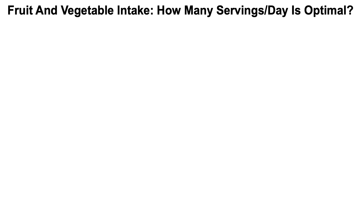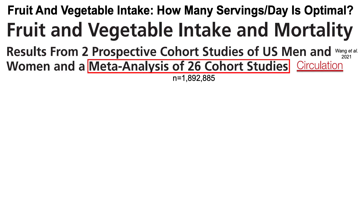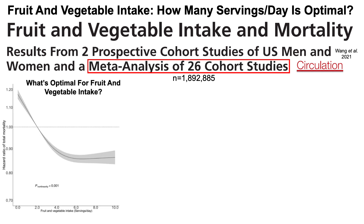Fruit and vegetable intake — how many servings per day is optimal? To help answer that question, let's take a look at this meta-analysis of 26 studies that included data for 1.9 million subjects. We've got the hazard ratio of total mortality, or all-cause mortality risk, on the y-axis plotted against fruit and vegetable intake in servings per day on the x-axis. One serving was 80 grams of either fruit or vegetable. When the shaded gray region is either completely above or completely below one, we have a statistically significant association.